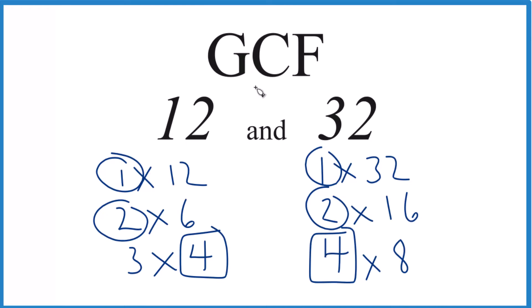So, in answer to our question, the greatest common factor, the GCF, for 12 and 32, that's going to be 4.